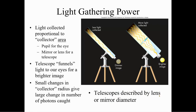Light gathering power — the light collected is proportional to the collecting area. Your eye pupil has a collecting area, as do mirrors or lenses for a telescope. Telescopes funnel light into our eyes for a brighter image. Small changes in collector radius give larger changes in numbers of photons caught — the whole object is to catch as many photons as we can. A larger collector area collects more light and makes the image brighter.